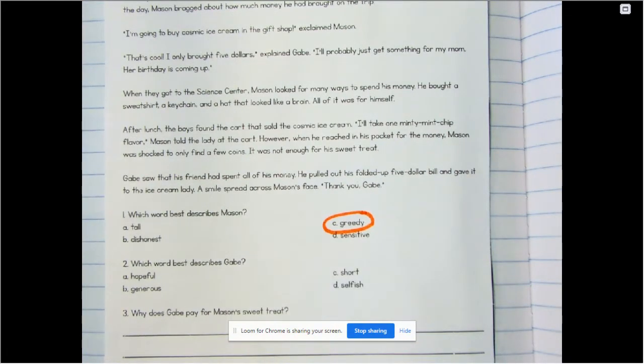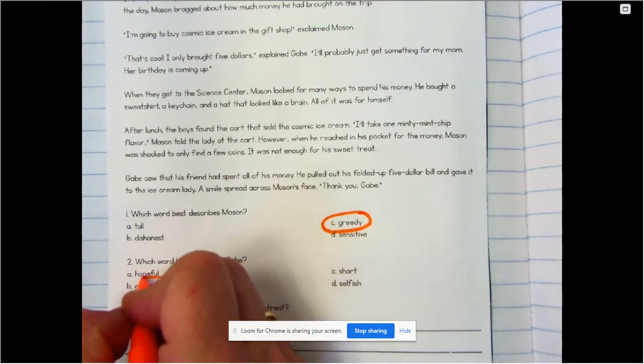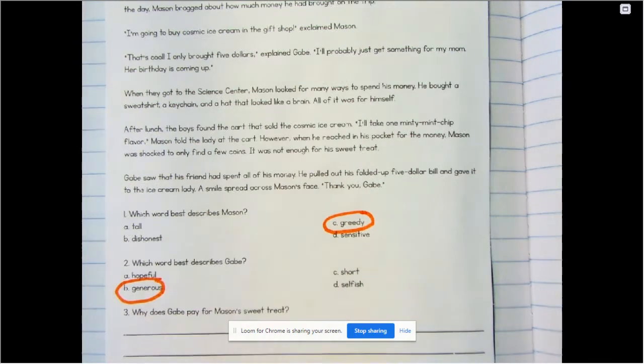Number two: which word best describes Gabe? Is he hopeful, generous, short, or selfish? Gabe is more generous, isn't he, because he took that money that he had and helped out his friend.